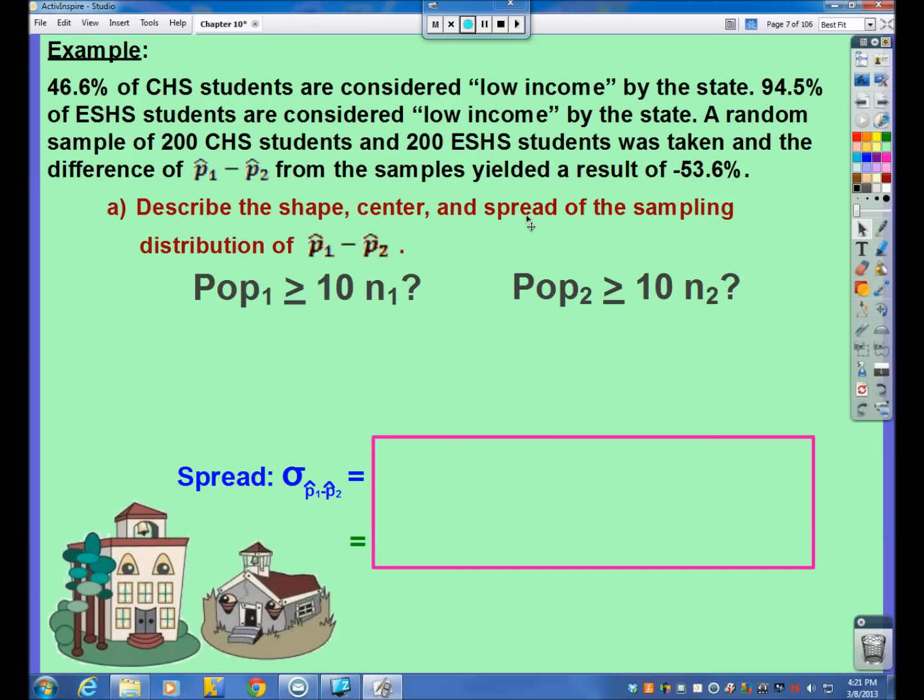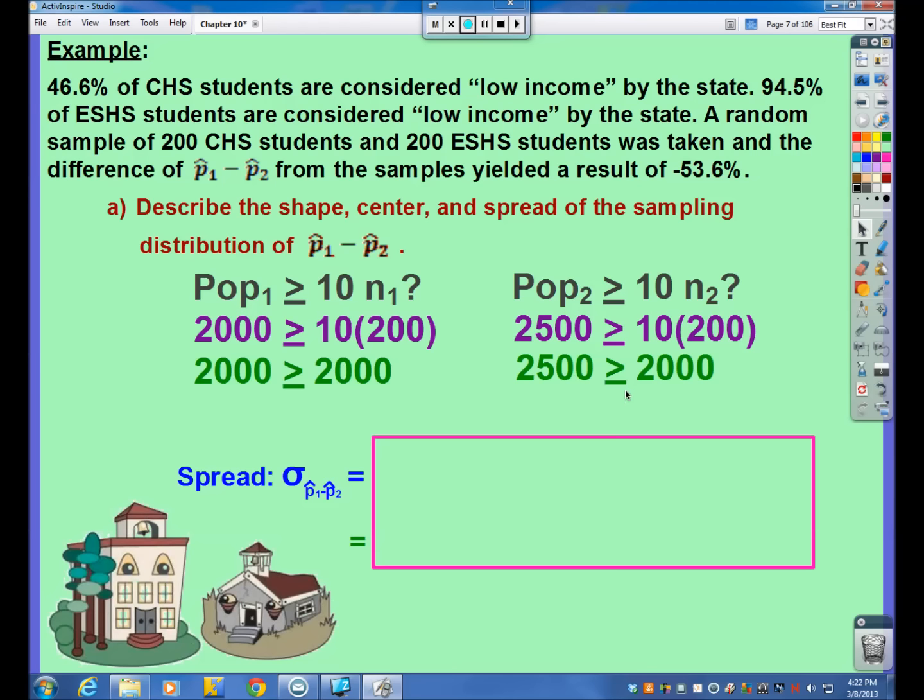Part three, the spread, which is related to our standard deviation. First, let's check our two conditions here, or really the one condition twice. Are the populations for both schools at least 10 times the sample size? Well, we're really talking about the population of CHS, which is right around 2,000 students. So, is 2,000 greater than or equal to 10 times 200? Yeah, this is really the exact minimum we would need to see here. It is equal, so this does check out. Now, the population of ESHS is 2,500 students. You would need to be, you would have to be given this information, basically I'm telling this information to you now at this point. So, 2,500 is in fact greater than or equal to 2,000, so these two conditions have checked out, therefore we may calculate the standard deviation.